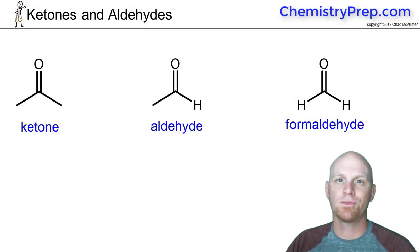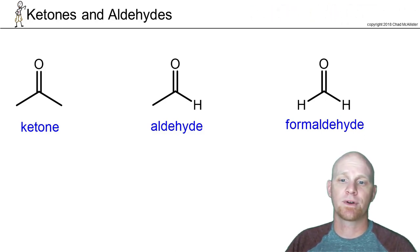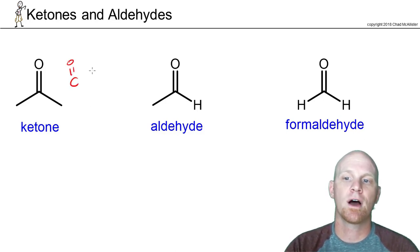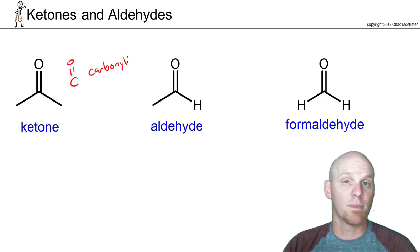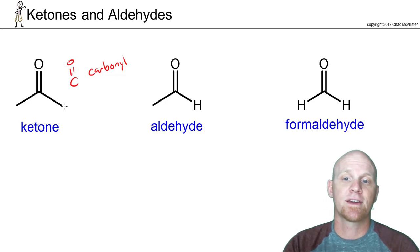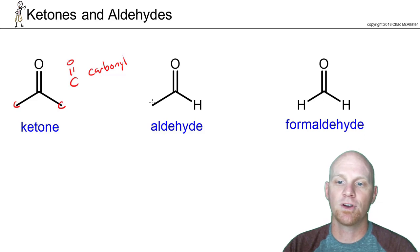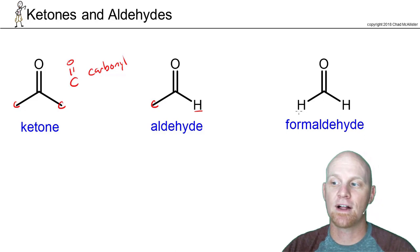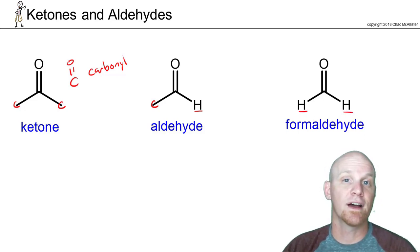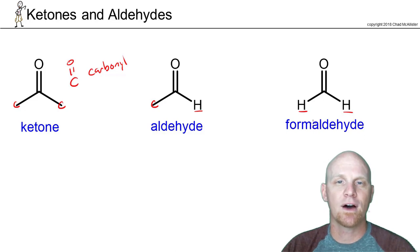The next functional groups are ketones and aldehydes. A whole chapter covers these two together since they're closely related. Both have a carbonyl, which is a carbon-double bond. A ketone has a carbonyl with carbon chains on both sides, while an aldehyde has a carbonyl with a carbon chain on one side and a hydrogen on the other. Formaldehyde is technically an aldehyde with hydrogens on both sides.